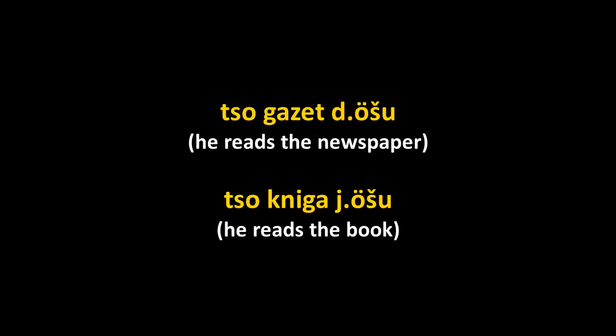'He reads the newspaper': tso gazet durju. Newspaper is gazet, taken from the Russian gazeta. The verb agrees with gazet: gazet is a D noun, so the verb takes the D prefix. However, kniga ('book') is a Y noun, so it requires the Y/J prefix. Therefore 'he reads the book' is tso kniga yershu, not dershu.